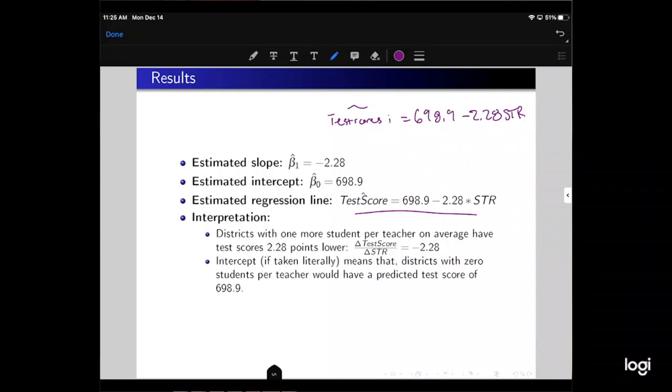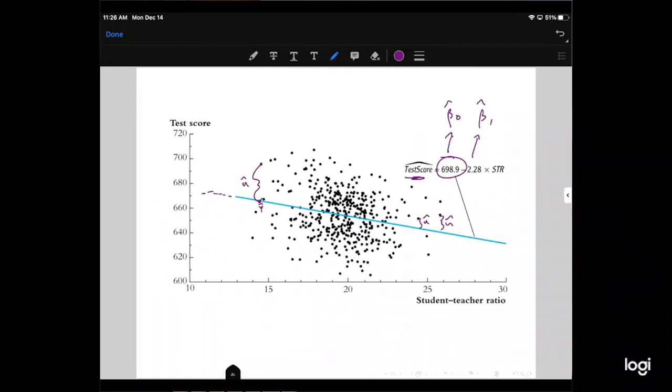The intercept, if taken literally, means that districts with zero students per teacher would have a predicted test score of 698.9. Does that make any sense? Not really, because we're not going to have any districts with zero students per teacher. What would be the point of a teacher with no students? So this is sort of a caution going forward. Don't extrapolate beyond the data that you have. Don't take the regression line literally to mean that we could have negative students. We could extrapolate this regression line past zero and talk about class sizes of negative numbers of students, like negative 15 students, but that doesn't really make any sense.